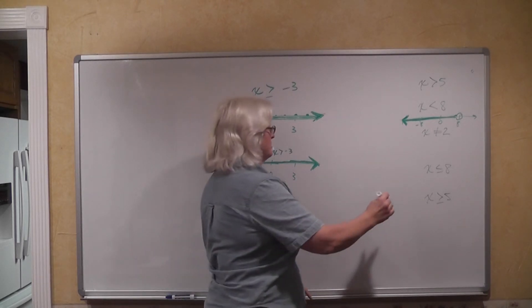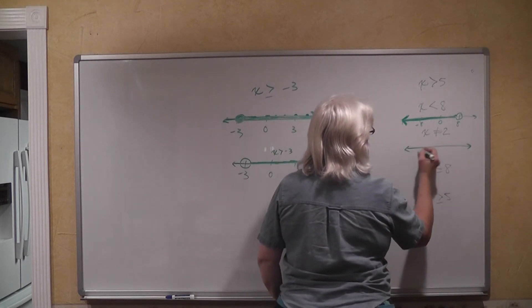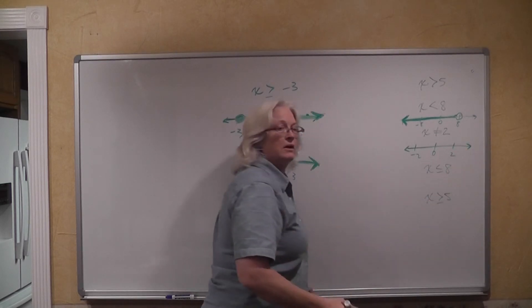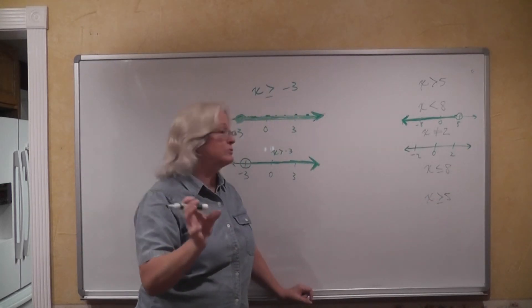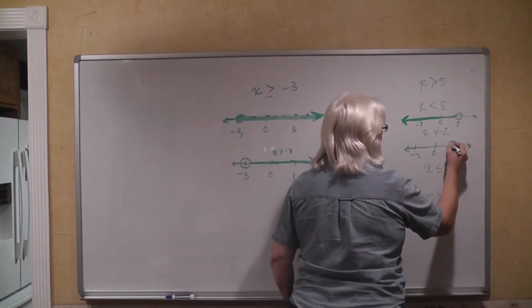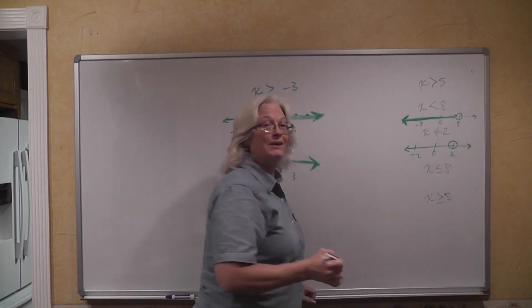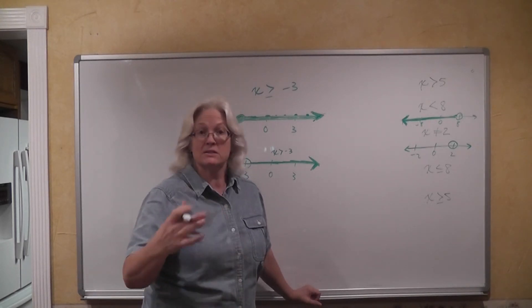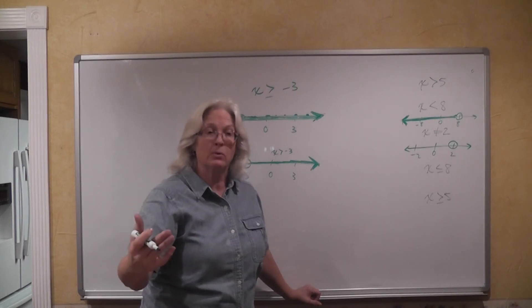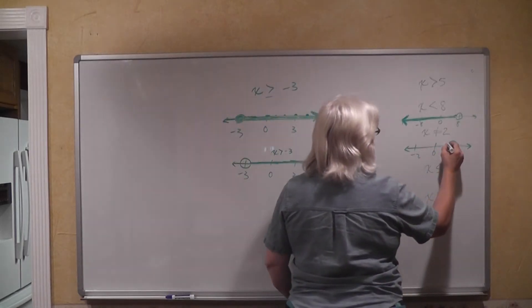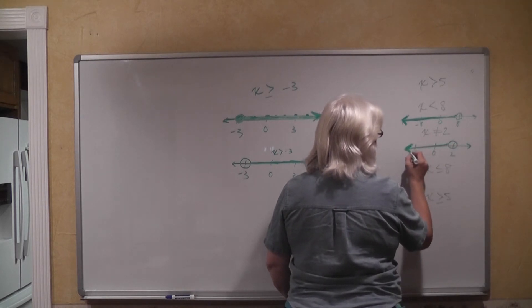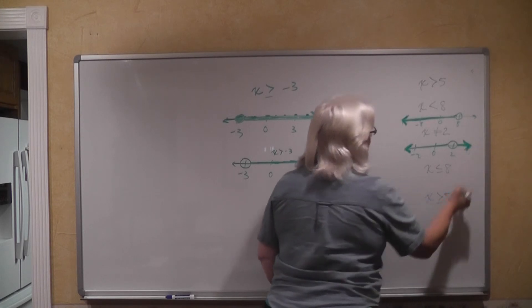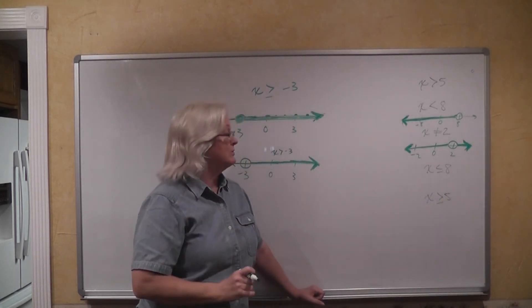What about x is not equal to two? Let's say we have negative two and two on the number line. If something cannot be equal to a number, we have an open circle. Two cannot be part of the solution because x can't equal two, but it doesn't say x may not equal anything else. So the entire rest of the number line is part of the solution — you're going to shade every bit of that number line except the number two itself.